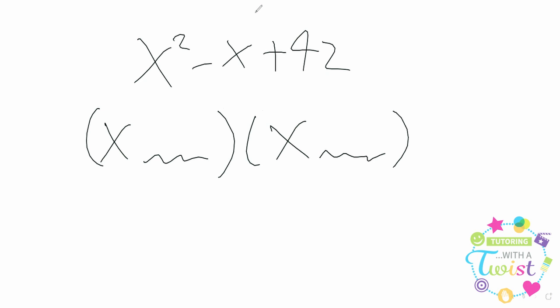So let's say we had something like, I don't know, let's say x squared minus x plus, um, how about 42? Okay, so we know that we're going to have something like x plus or minus something multiplied by x plus or minus something else. And we know that those two things are going to have to multiply up to be 42.